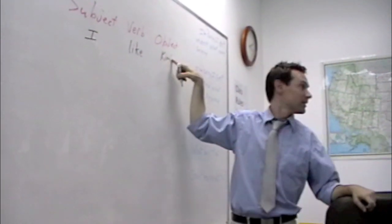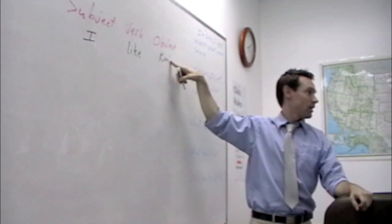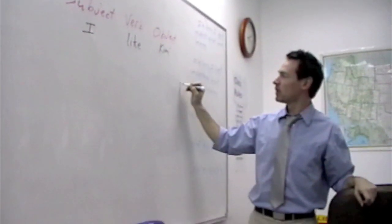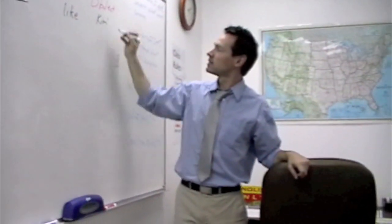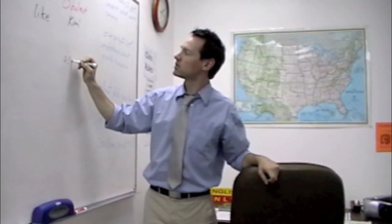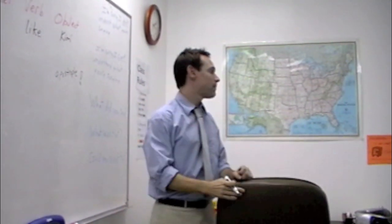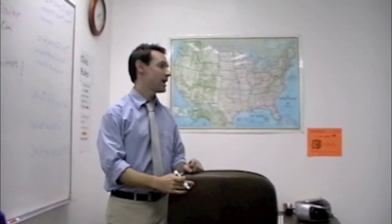What is this? This is exclamation mark. This is apostrophe. Apostrophe. Yeah, say it together. Apostrophe. Apostrophe. Apostrophe. Good.